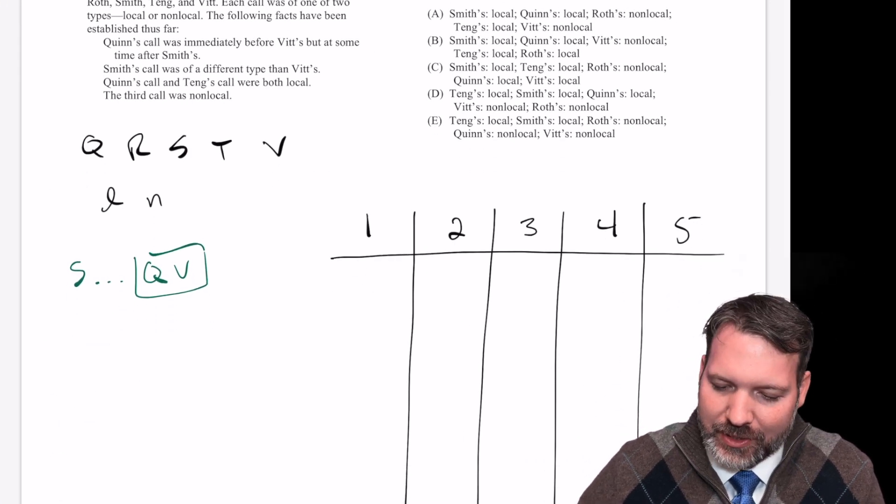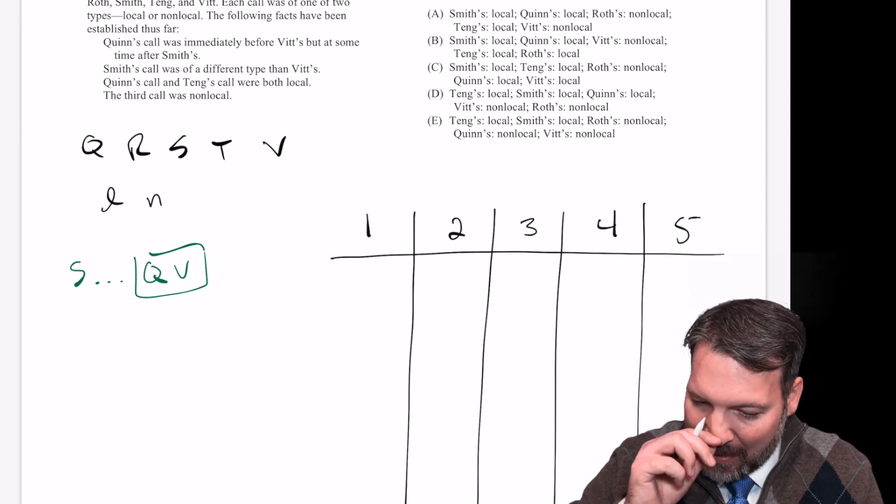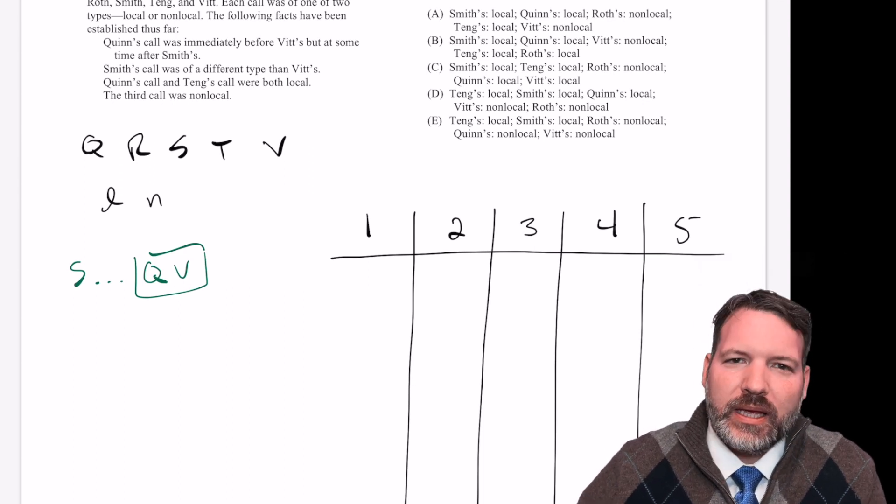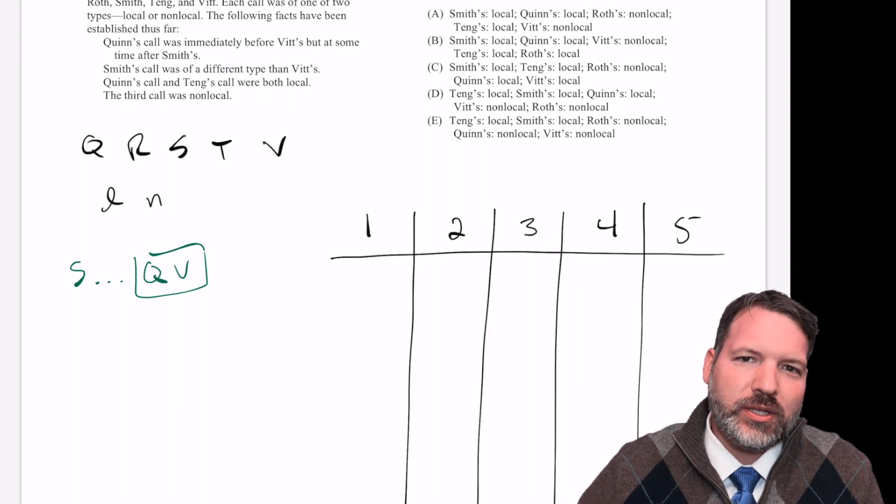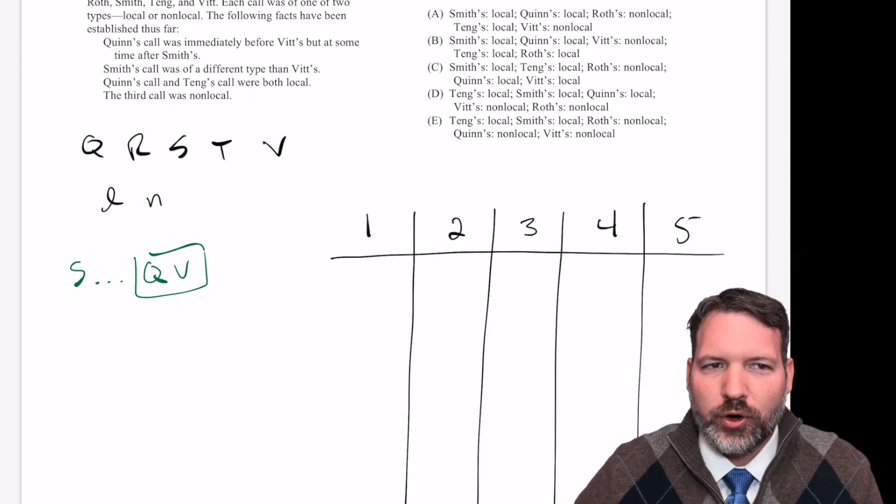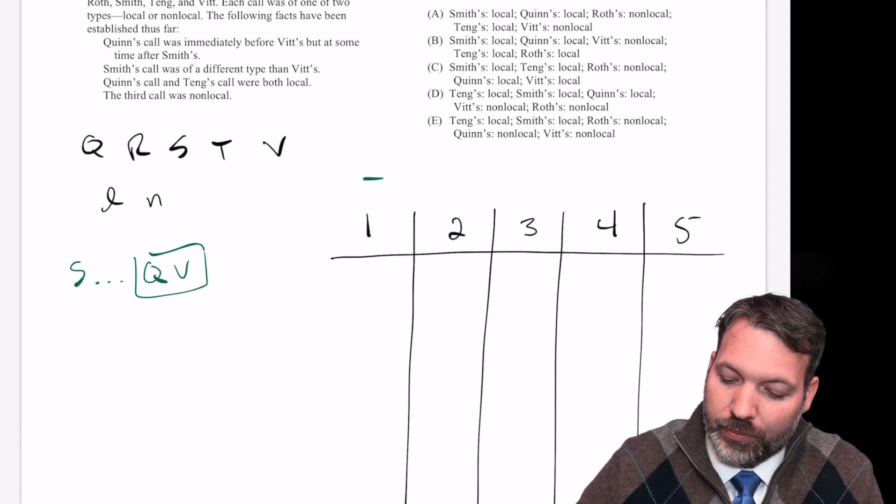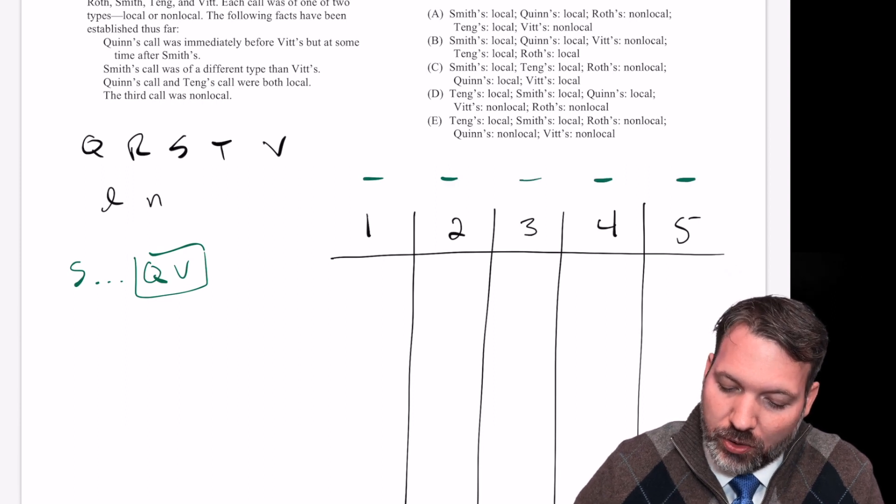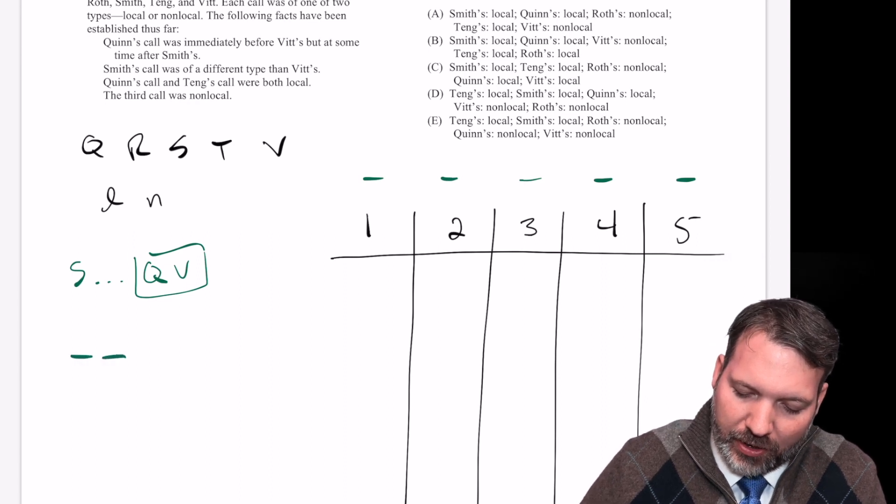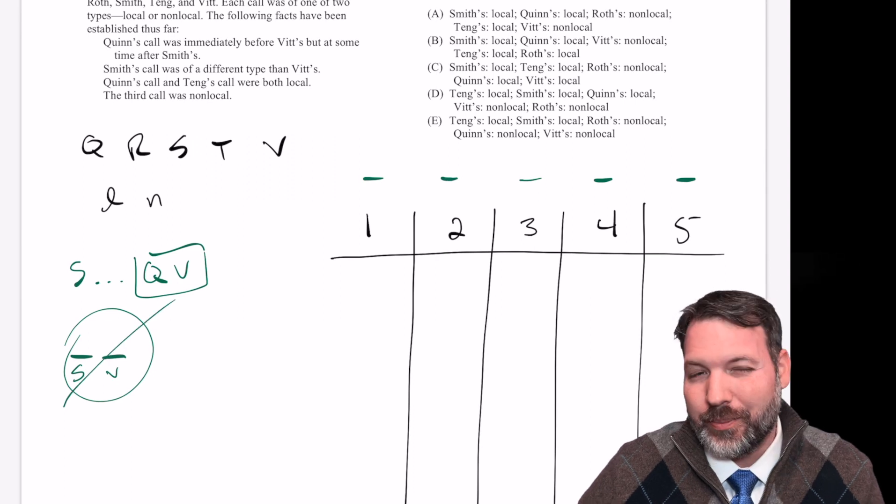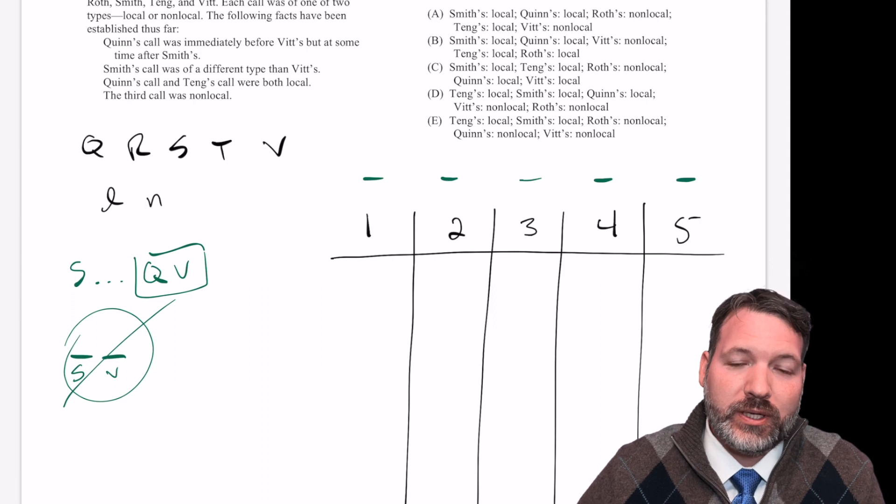You know what, I take it back. It is best to do this one as a two-dimensional order game. It's just that the second dimension, the type of call, I can reuse multiple times. So for all I know, I can use five L's here, I can use five N's, I can use any combination of L's and N's as long as I have five total elements. So I actually am going to set this up two dimensionally. As far as how to do this clue, I think what I'm going to do is this. I'm going to set up my blanks there and I'm going to put s and v on the bottom. That's not what I'm going to do over here. I'm going to do L's and N's, but I think that's the easiest way to show s and v have to be different types of calls.